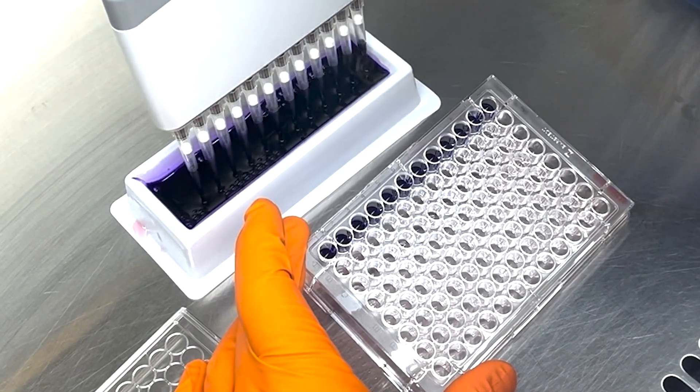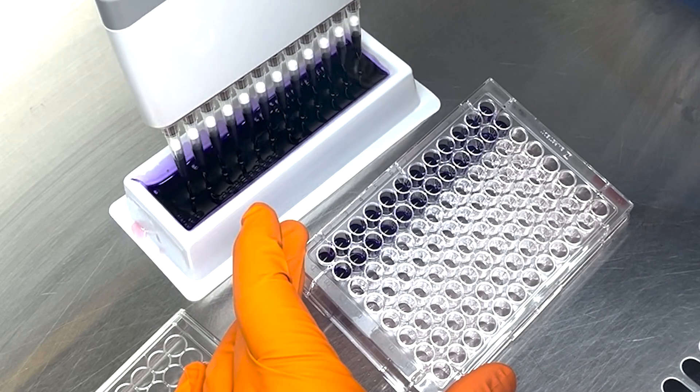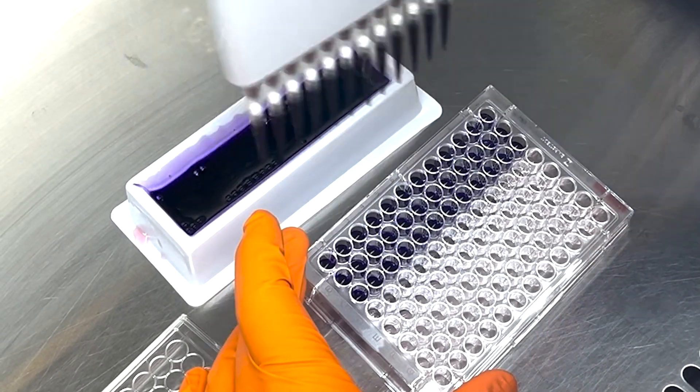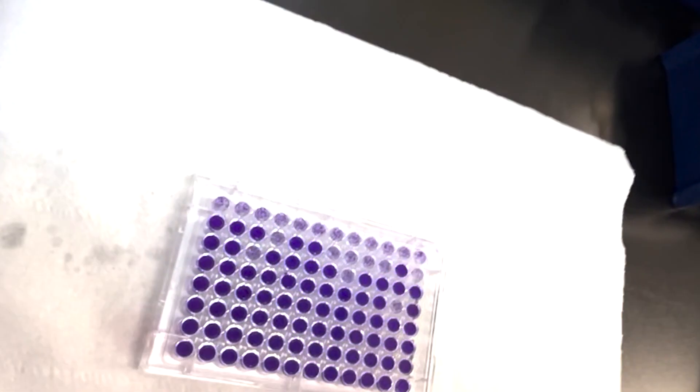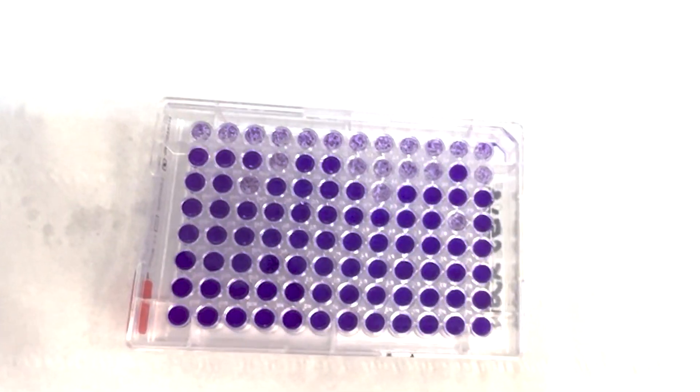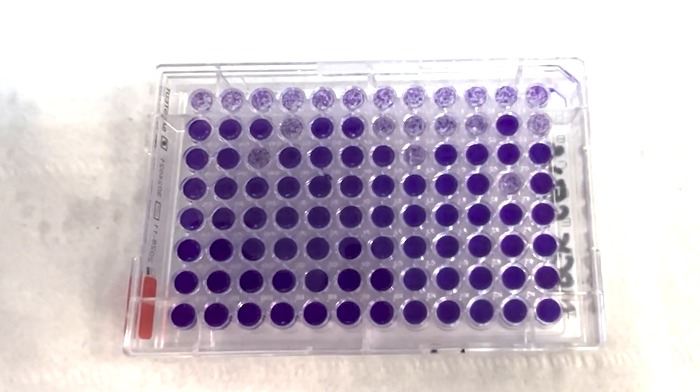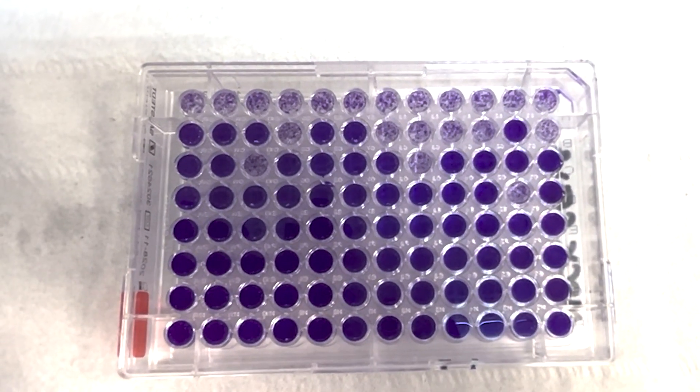This dye penetrates and colors the cells in the wells, highlighting their presence distinctly. The wells that appear light or clear indicate where the cells have succumbed to the virus. These are the wells we count as infected. It's a clear visual guide to understanding the extent of the infection.